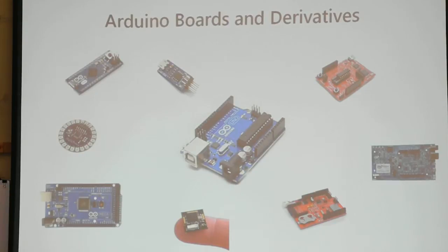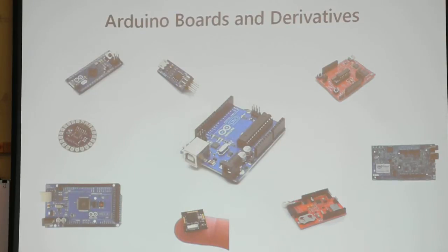The Raspberry Pi is also very interesting and very popular. It's a microprocessor and involves an operating system. The Arduino Uno is good for real-time applications, while the Raspberry Pi is better suited for more processing-intensive types of applications.